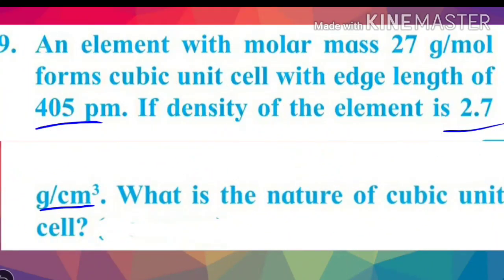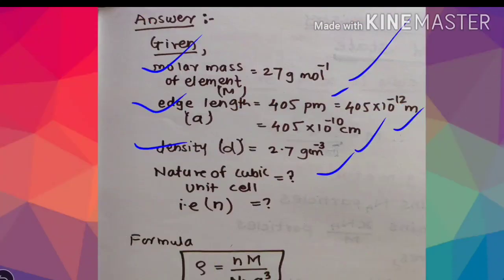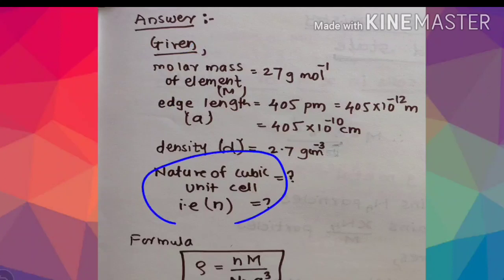Is the cubic unit cell SC, BCC, or FCC? We have to find out by calculating. Here we have to find the value of n, which means number of particles per unit cell.